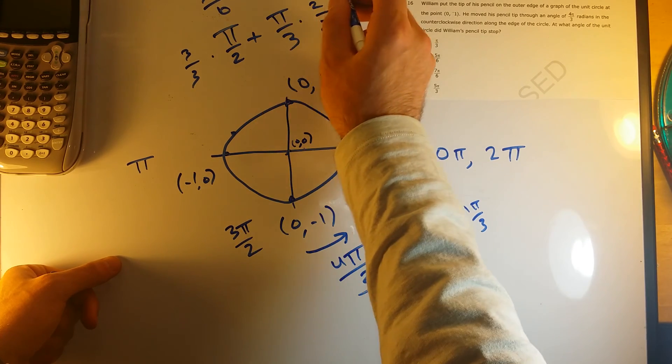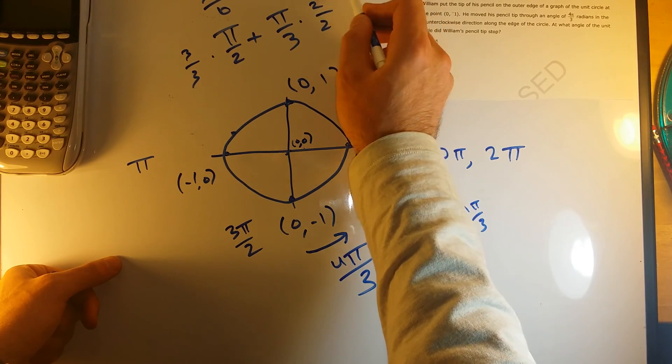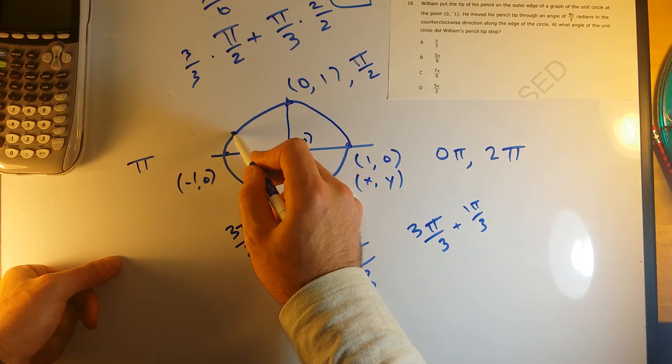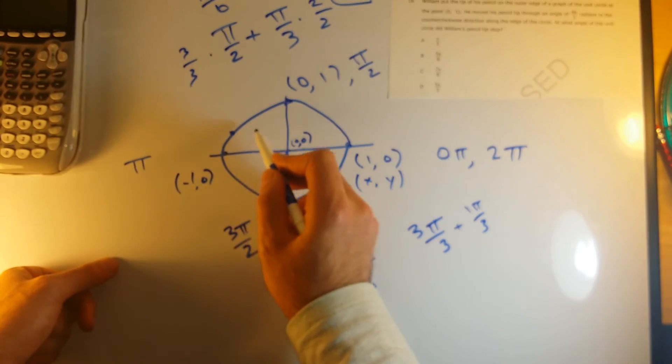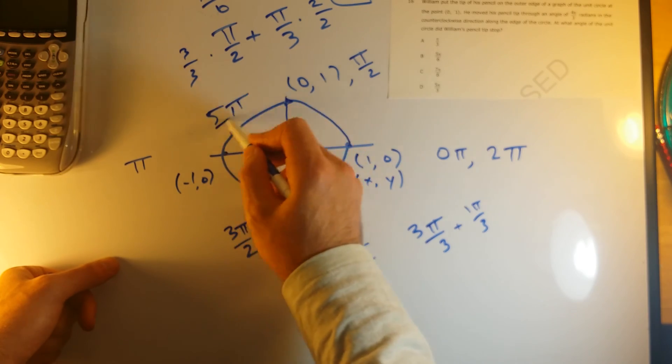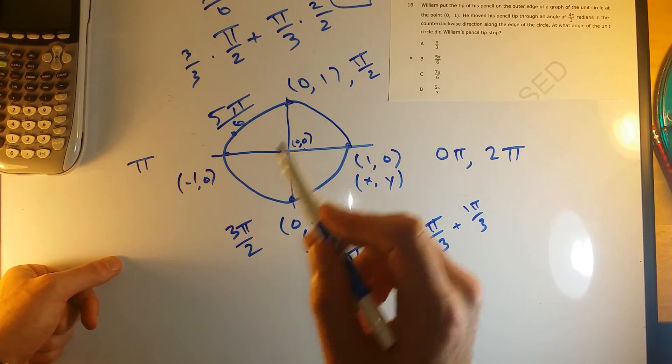Add these up, and I would be at 5π over 6. That would be this location. My angle here would be 5π over 6. And that's answer choice B.